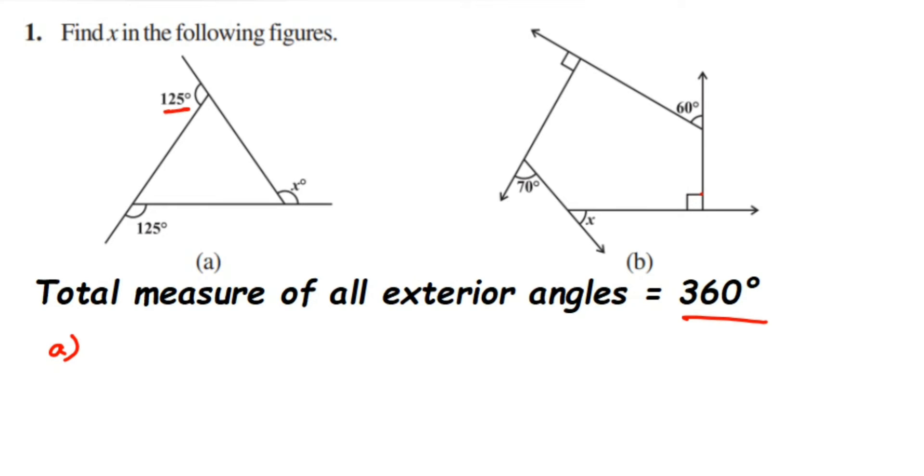So this first angle is 125 degrees plus second angle is also 125 degrees plus third angle is x. So sum of all the exterior angles is equal to 360 degrees.